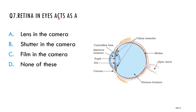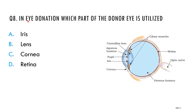Question seven: the retina in the eye acts as which part of a camera? Options: lens, shutter, film, none of these. The correct answer is film — the retina acts as a film in the camera. Question eight: in eye donation, which part of the donor eye is utilized? Options: iris, lens, cornea, retina. The correct answer is cornea — this is the part used in eye donation.